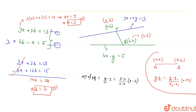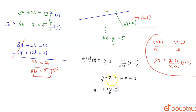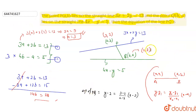So the equation becomes y - 2 = (1/-1) × (x - 3), which gives y - 2 = -x + 3, or x + y = 3 + 2 = 5. So the final answer is x + y = 5. This is the equation of line PQ. Thank you.